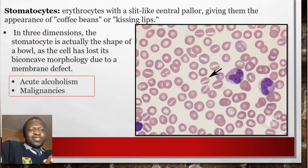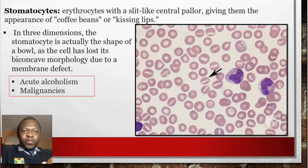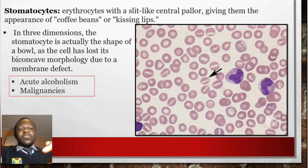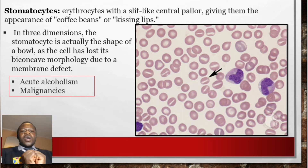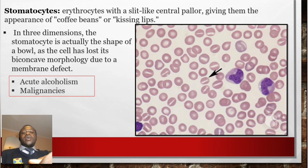Stomatocytes — 'stoma' means mouth — are erythrocytes with a slit-like central pallor giving them the appearance of coffee beans or kissing lips. In three dimensions, the stomatocyte is usually bowl-shaped, as the cell has lost its biconcave morphology due to a membrane defect. Stomatocytes are usually seen in acute alcoholism and some malignancies.